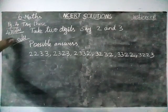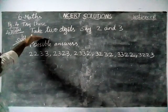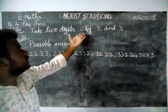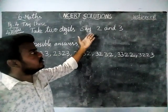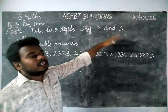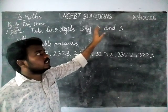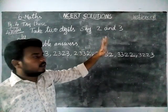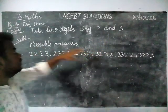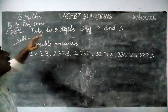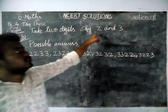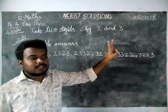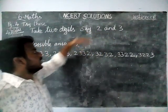For this problem, they have given a condition: take 2 digits — they have given 2 and 3. We have to take these and by using these 2 digits we have to make 4-digit numbers. They have also said we can use each digit 2 times.